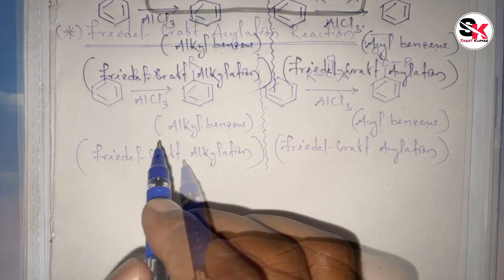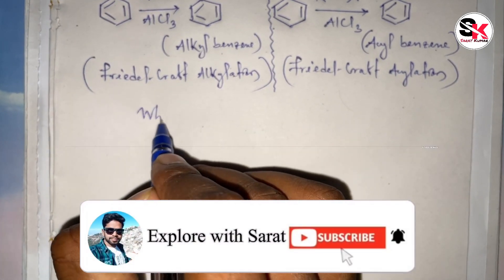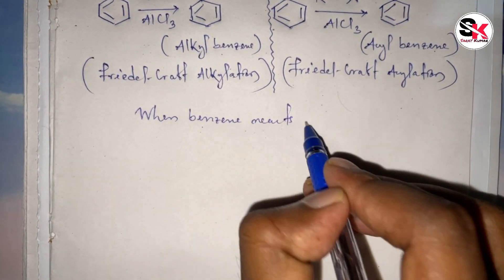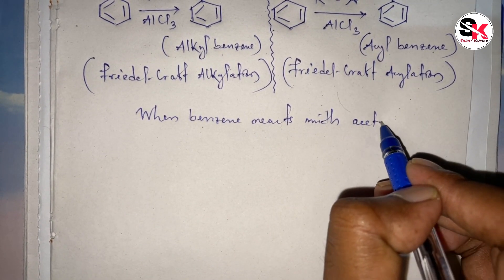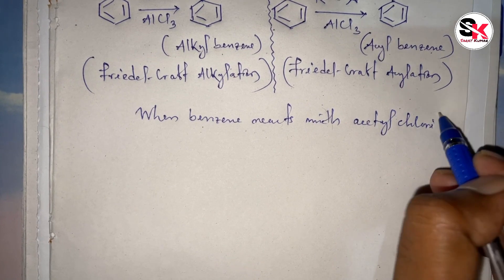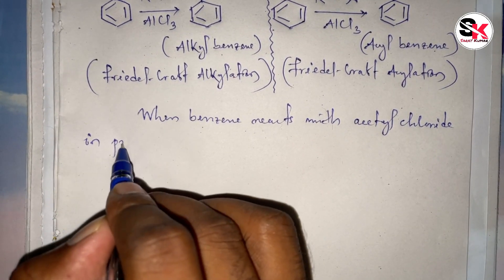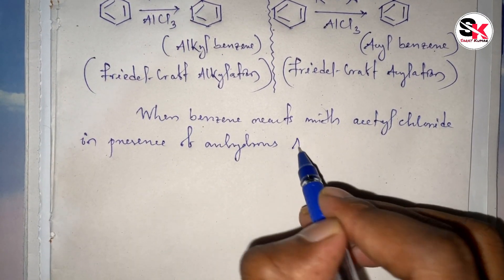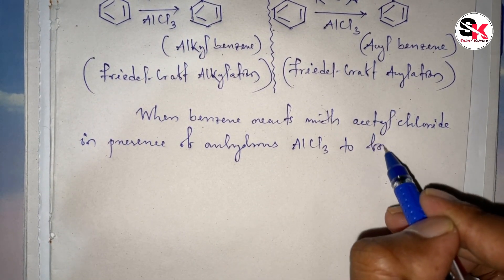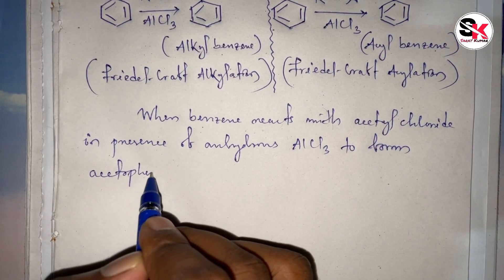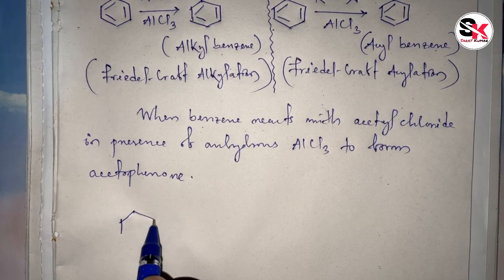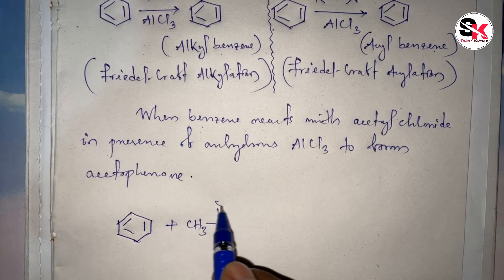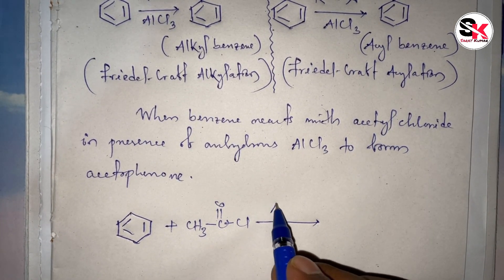Now let us discuss a particular reaction. When benzene reacts with acetyl chloride (CH3COCl) in presence of anhydrous AlCl3, to form acetophenone. If you want to know the mechanism of Friedel-Craft alkylation reaction, please go and watch my previous video.